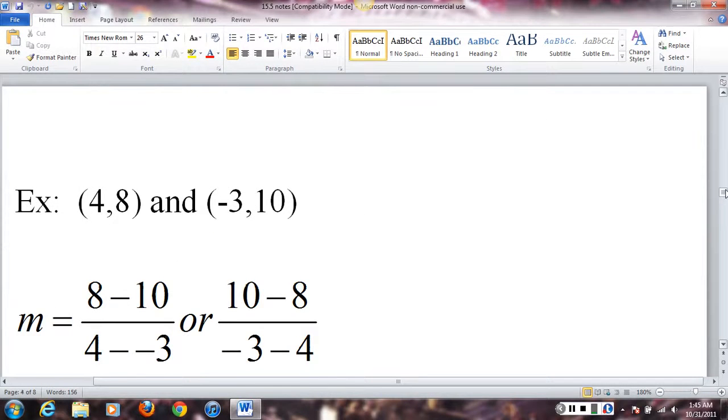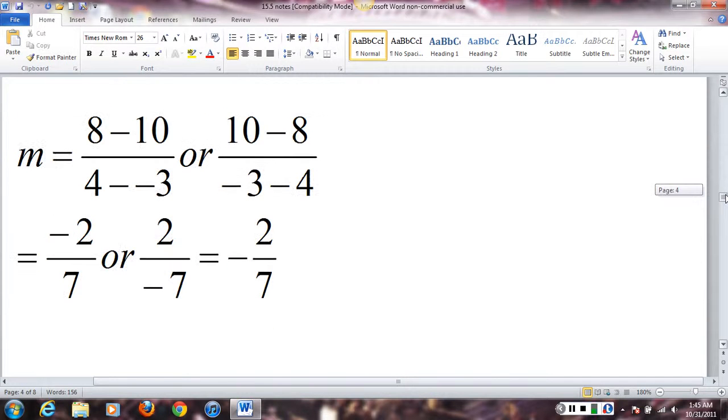So, review. Find the slope between these two points, (4, 8) and (-3, 10). 8 minus 10 over 4 minus negative 3, or, just do it in reverse, 10 minus 8, negative 3 minus 4, that's going to be negative 3 minus 4. Either way, you get negative 2/7. And as you can see, depending on how you do it, the negative may be in the numerator or the denominator. It doesn't matter. Usually, it's written out in front. They're all the same.